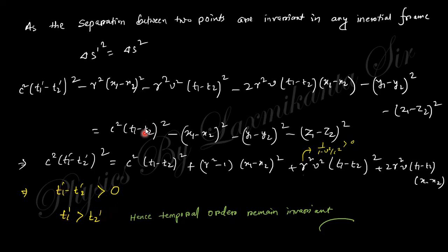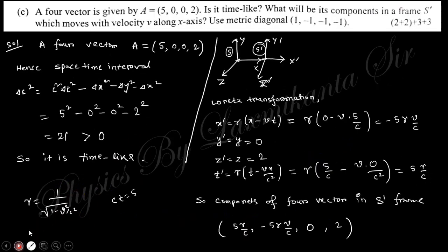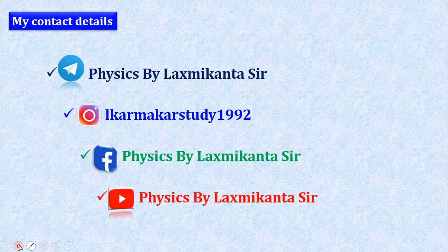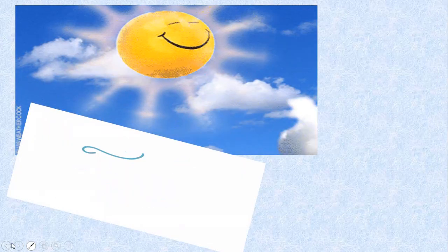The last question: a four-vector is given; computing the space-time interval gives 21, which is greater than zero — so it is time-like. Using the Lorentz transformation for a frame S' moving with velocity v along the x-axis, the components x', y', z', t' of the four-vector are found. The first component is the time component and the remaining three are spatial. This concludes the video. This is my contact detail and YouTube channel — take care, we will meet in the next video.